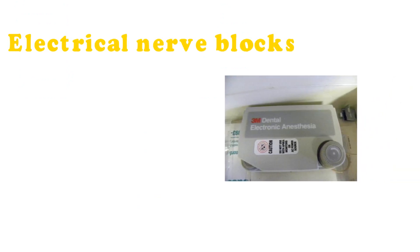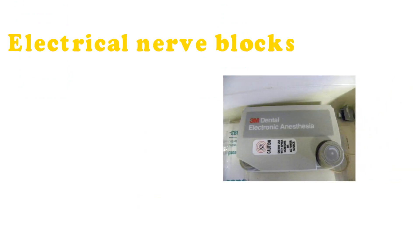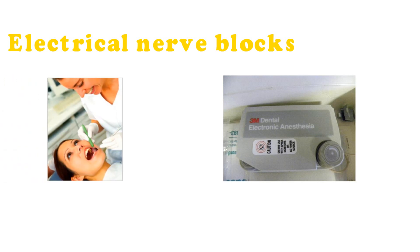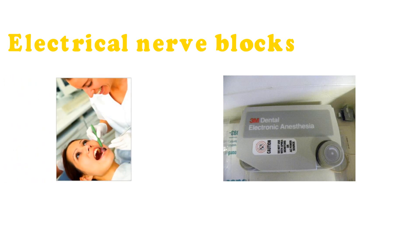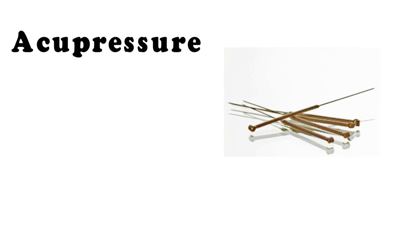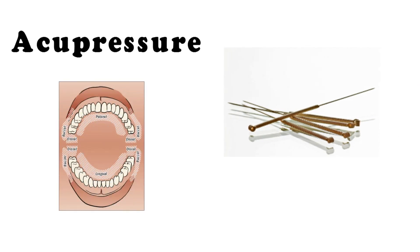Electrical nerve blocks use electric current to block the reception or generation of pain signals. Pain control can also be achieved through transcutaneous acupuncture or acupressure as an alternative to chemical or electrical blocks, though these are rarely used.